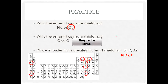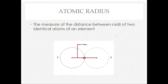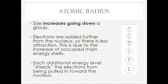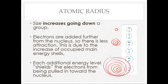The second property is atomic radius — basically the size of an atom. It is the measure of the distance between the radii of two identical atoms of an element. Going down a group, size increases because you're creating more distance by adding more energy levels. For example, hydrogen has one energy level, sodium has three, and cesium has six — you can clearly see it getting bigger.